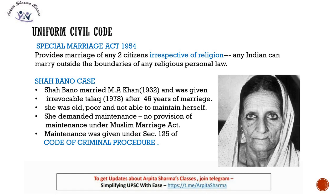After the B.N. Rao Committee, the Special Marriage Act of 1954 was enacted. We saw that personal laws relate to marriage, adoption, maintenance, etc. The Hindu Marriage Act applied to Hindus and a separate act applied to Muslims. The Special Marriage Act provided for the marriage of any two citizens irrespective of religion — any Indian can marry outside the boundaries of any religious personal law. Any two Indian citizens who do not wish to follow their religious personal laws can marry under this common act.